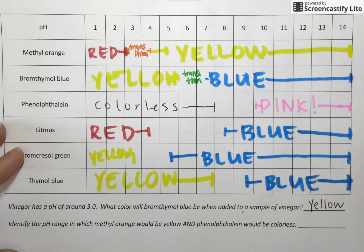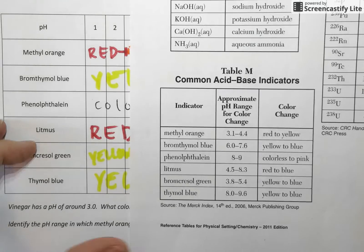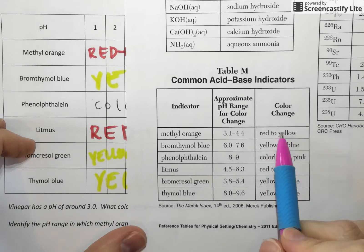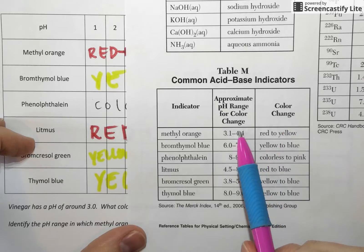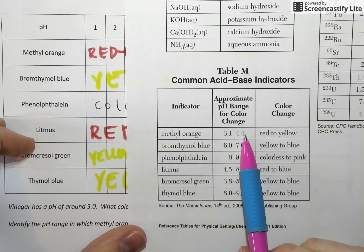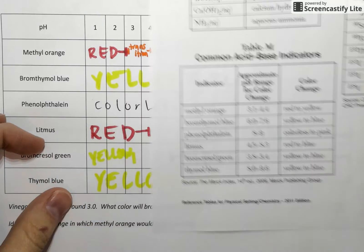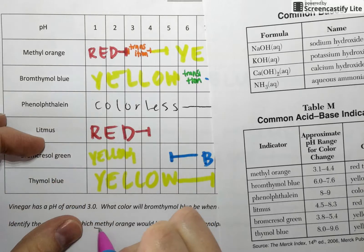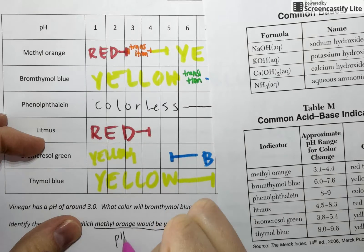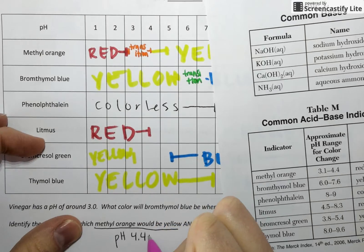The next question is asking us to identify a pH range where methyl orange would be yellow and phenolphthalein would be colorless. Well, if methyl orange is yellow, I'm going to go over to table M now because this is what you're going to have on tests and whatnot. If methyl orange is yellow, that's the color to the right. So we need to be to the right of this color change range. So that has to be a pH above 4.4. So if methyl orange is yellow, that's pH 4.4 and up.